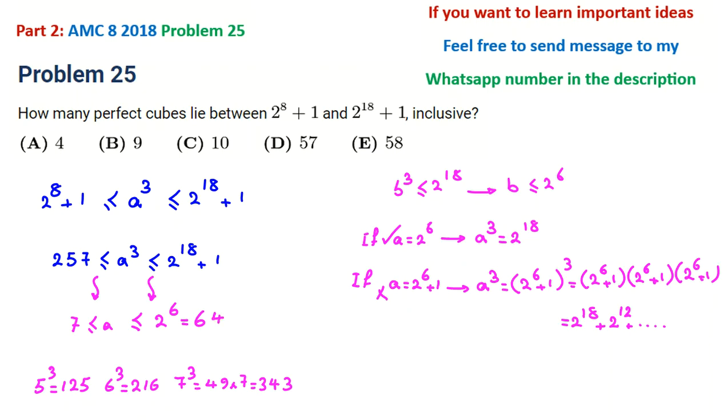2⁶ = 64, so the answer will be 64 - 7 + 1 = 57 + 1 = 58. That is our answer.